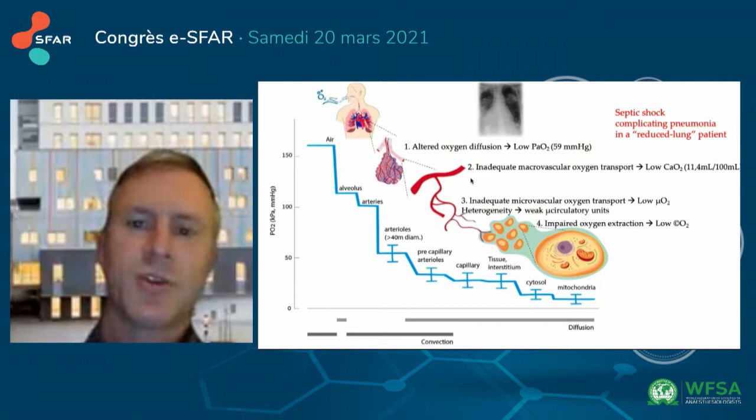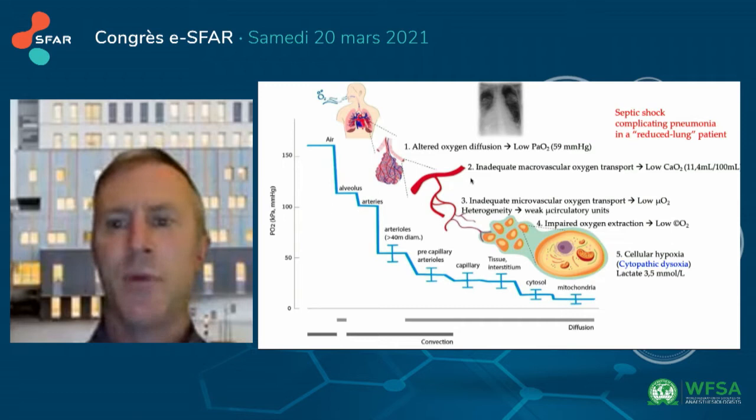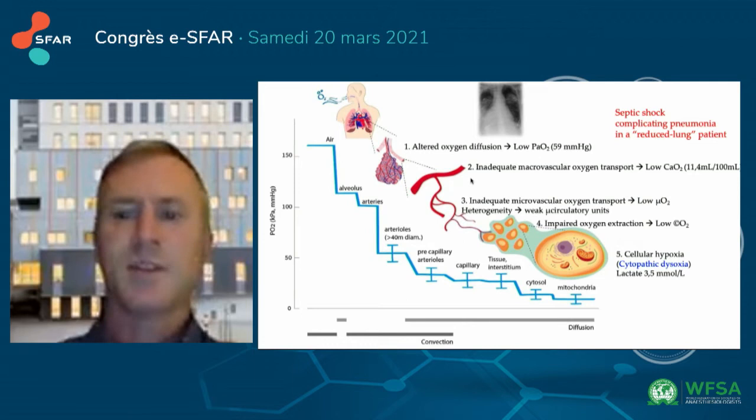There's also inadequate microvascular oxygen transport. If we calculate oxygen content, it's around 11. There's also inadequate microvascular oxygen transport and a low microvascular oxygen tension. And you know that sepsis drives impaired oxygen extraction and low cellular oxygen tension.